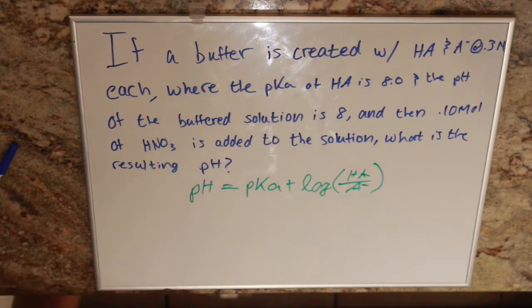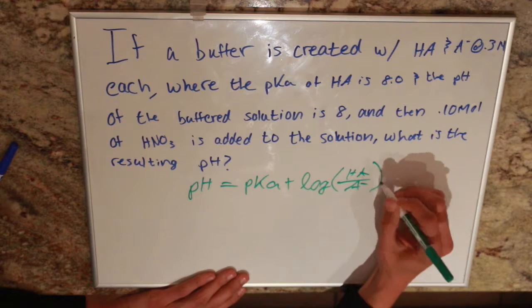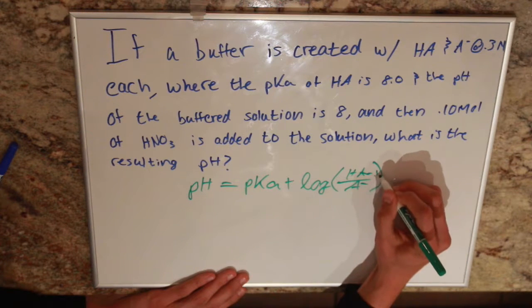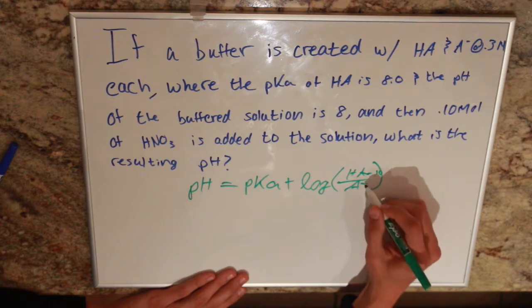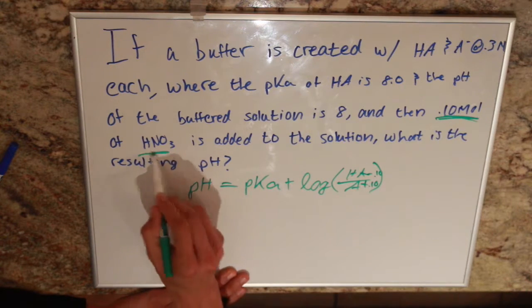And so, since we are adding an acid, we're going to have to subtract from the base, 0.10, and we're going to add 0.10 to the bottom. And 0.10 is these moles of nitric acid.